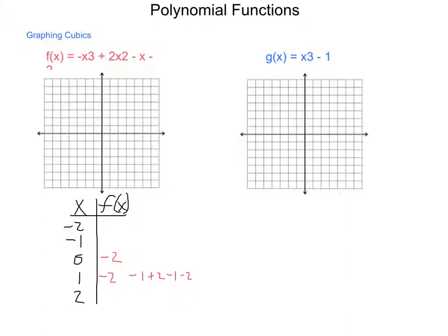If I substitute in a 2 and run through the same thing, 2³ is 8 so I have -8, 2² is 4 times 2 is 8 so I have a +8, minus 2 minus 2 again, this gives me a -4 once everything is put together.